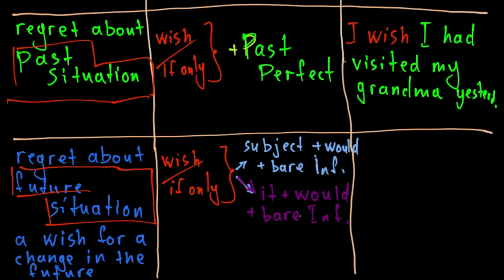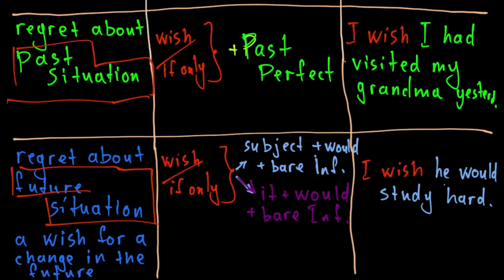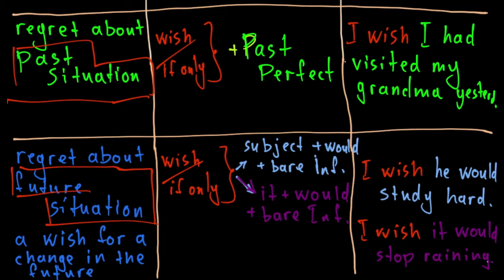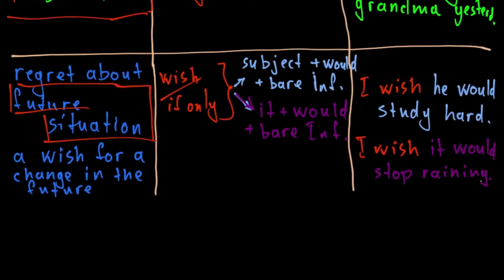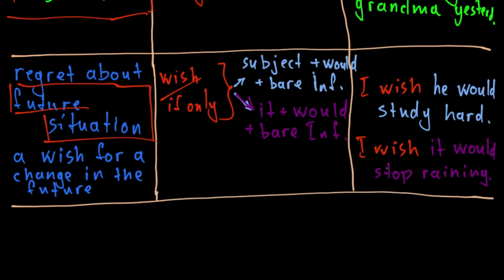In the first case, 'I wish he would study harder' — I express my wish for change, and there is some possibility it could happen. In the second case, 'I wish it would stop raining' — I express a wish for change but I'm hopeless; I really don't believe the situation will change. So the difference is: in the first case there is some possibility for change, but in the second case there is none.